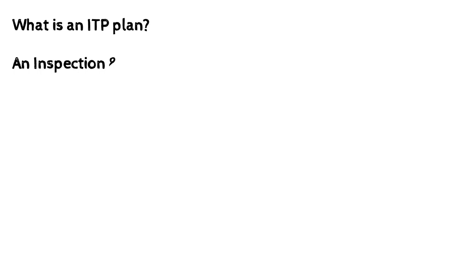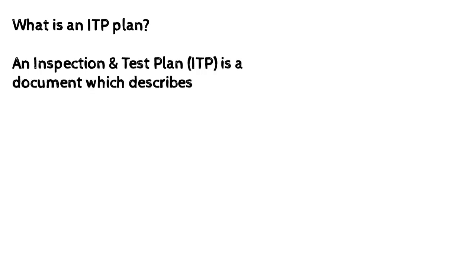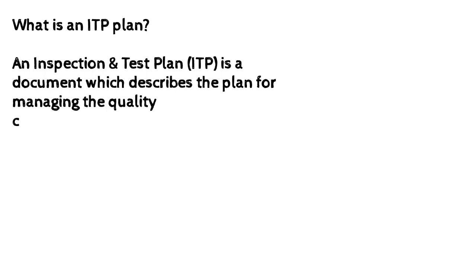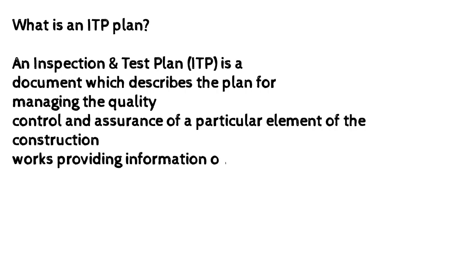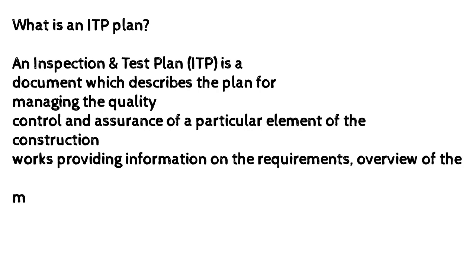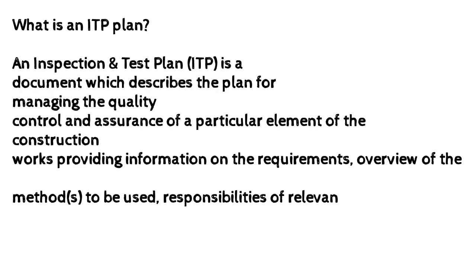What is an ITP plan? An inspection and test plan (ITP) is a document which describes the plan for managing the quality control and assurance of a particular element of the construction works, providing information on the requirements, overview of the methods to be used, responsibilities of relevant parties, and documentary evidence to be provided to verify compliance.